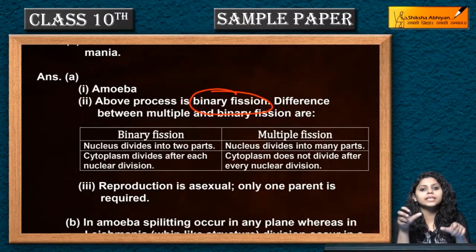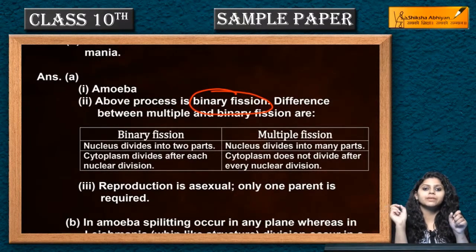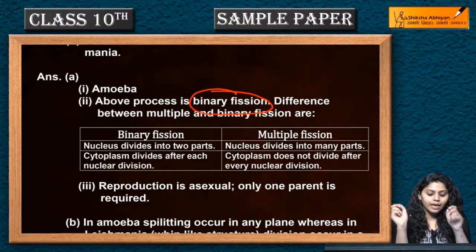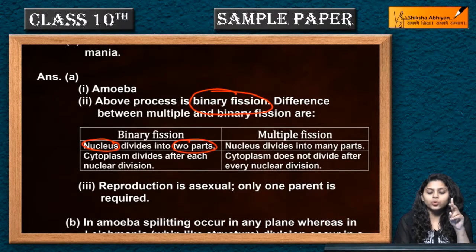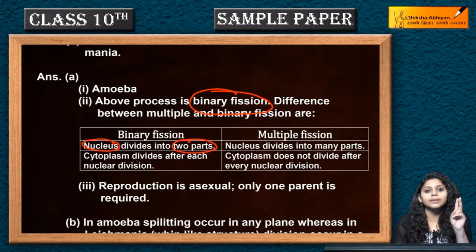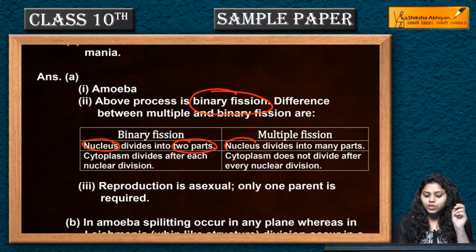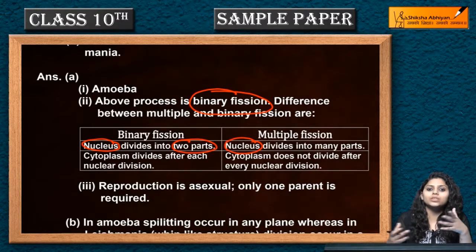Let us tell the differences between binary fission and multiple fission. In binary fission, the nucleus divides and two daughter nuclei are produced. Whereas in multiple fission, the nucleus divides and many daughter cells are produced.